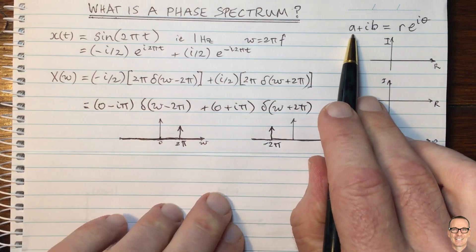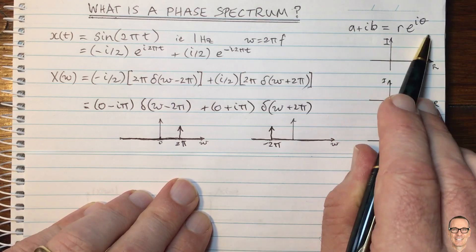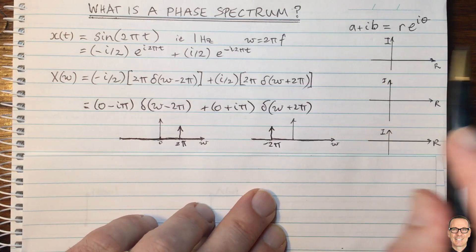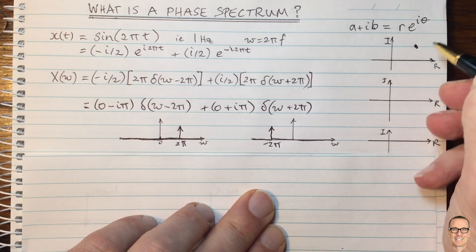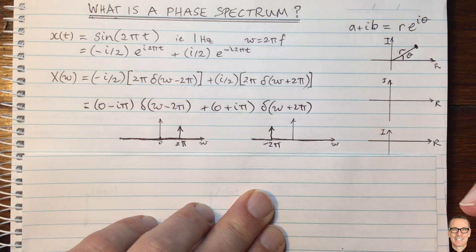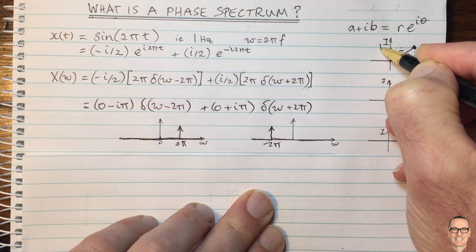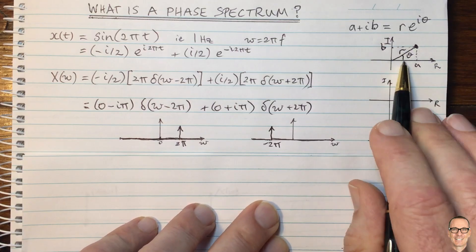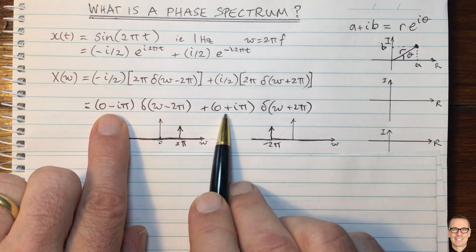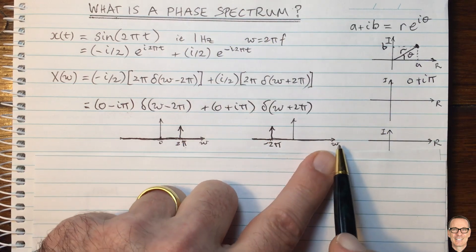To do this, let's think about our standard complex number a plus ib — the Cartesian representation. In polar representation it's r times e to the i theta. On a regular plot, r is the distance from the origin and theta is the angle. The real component is a and the imaginary component is b. We have ours written in Cartesian coordinates, and we need to find our amplitude and phase spectra for all values of omega.